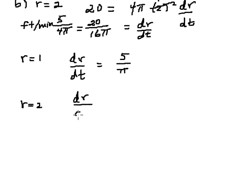...we had dr/dt was 5/(4π) feet per minute. So this is considerably smaller than the first value. So dr/dt is slowing down.